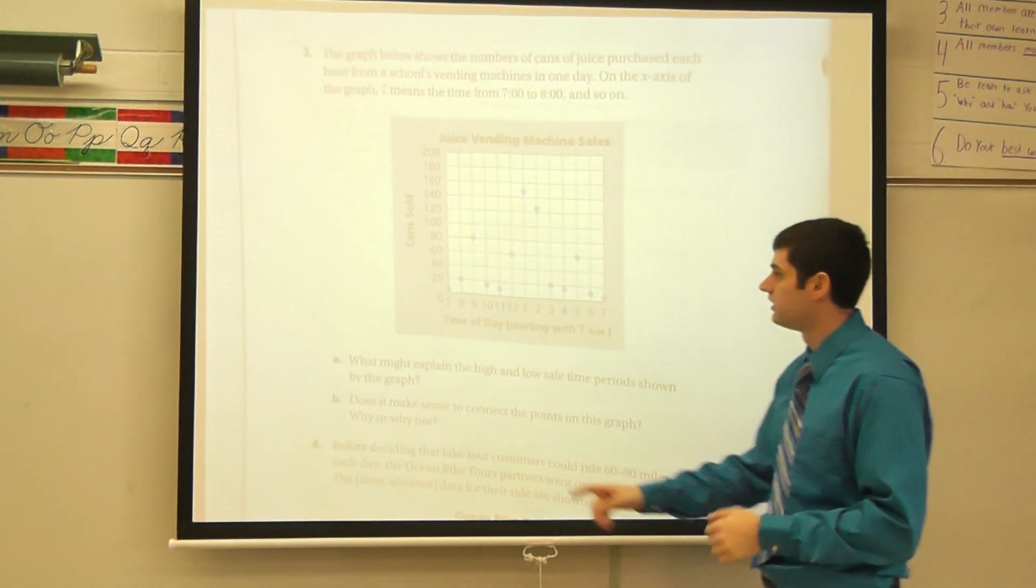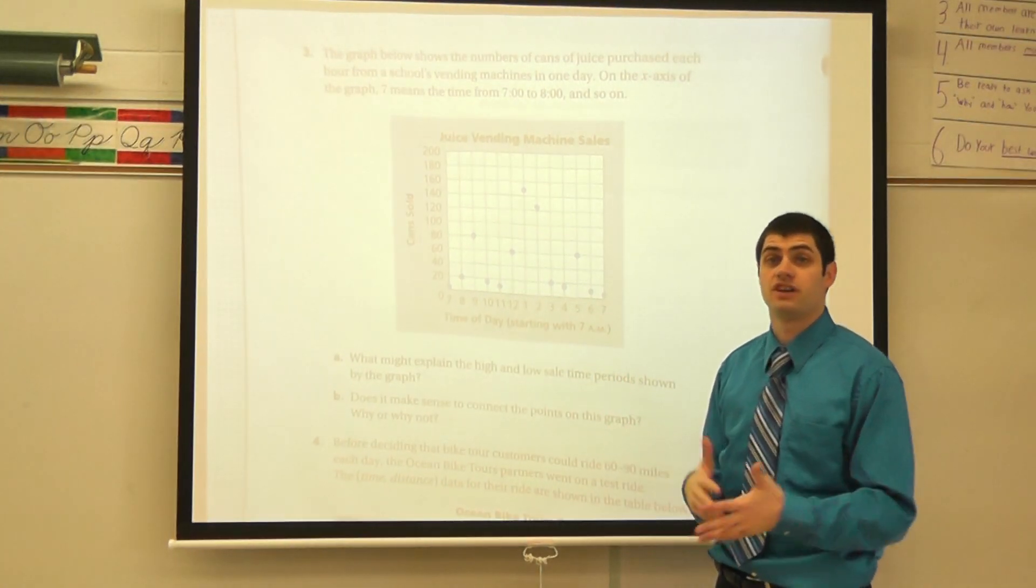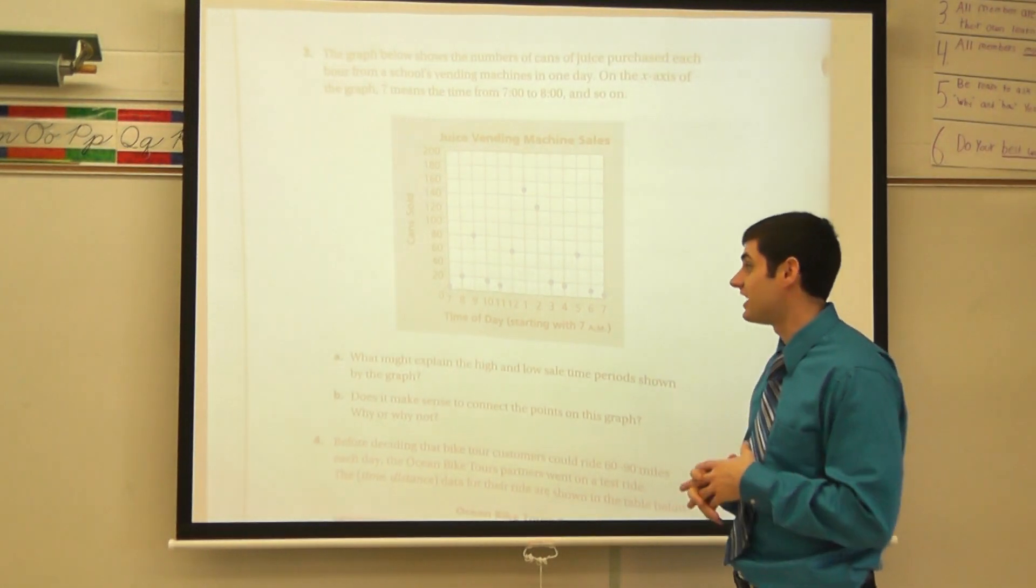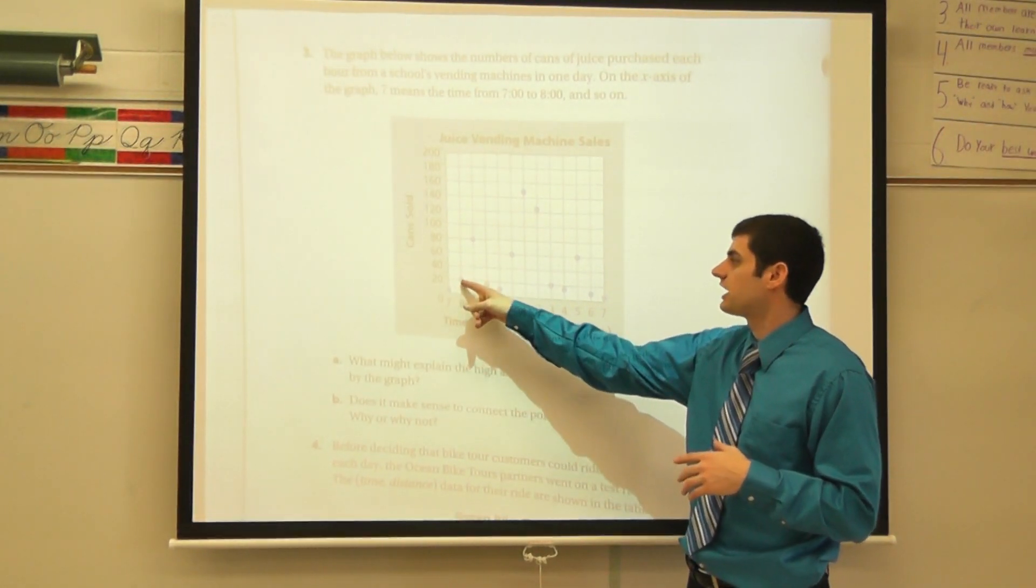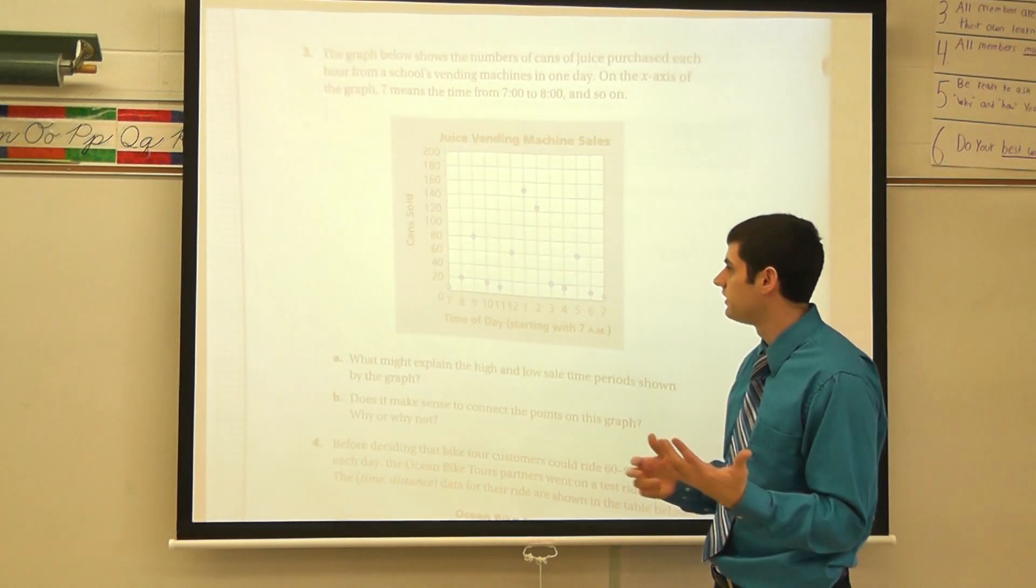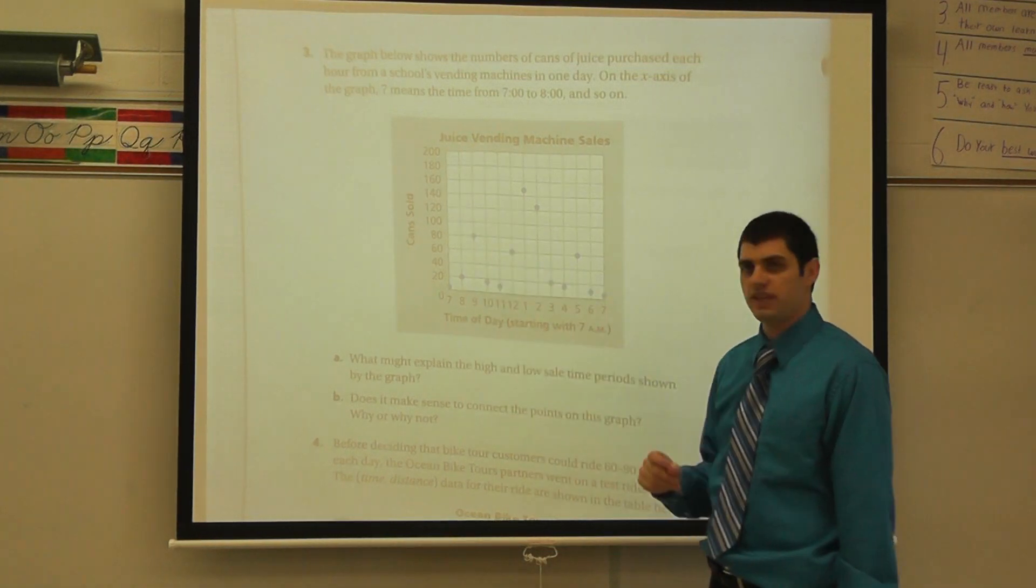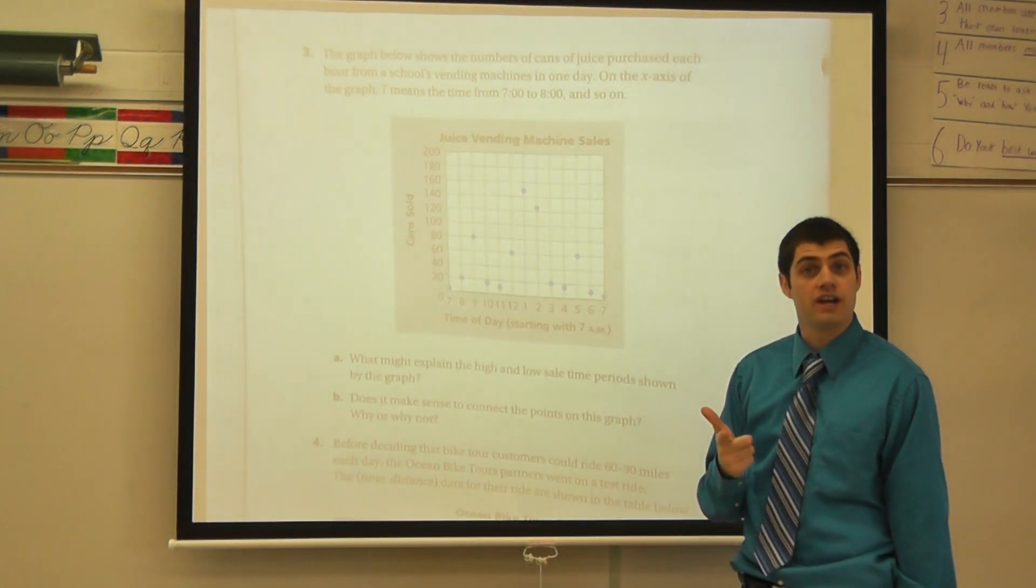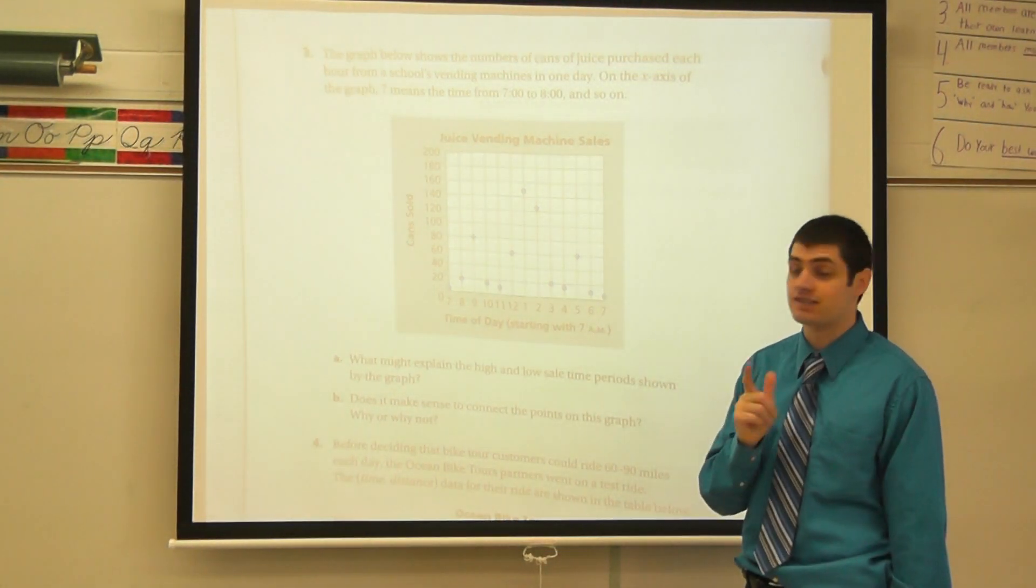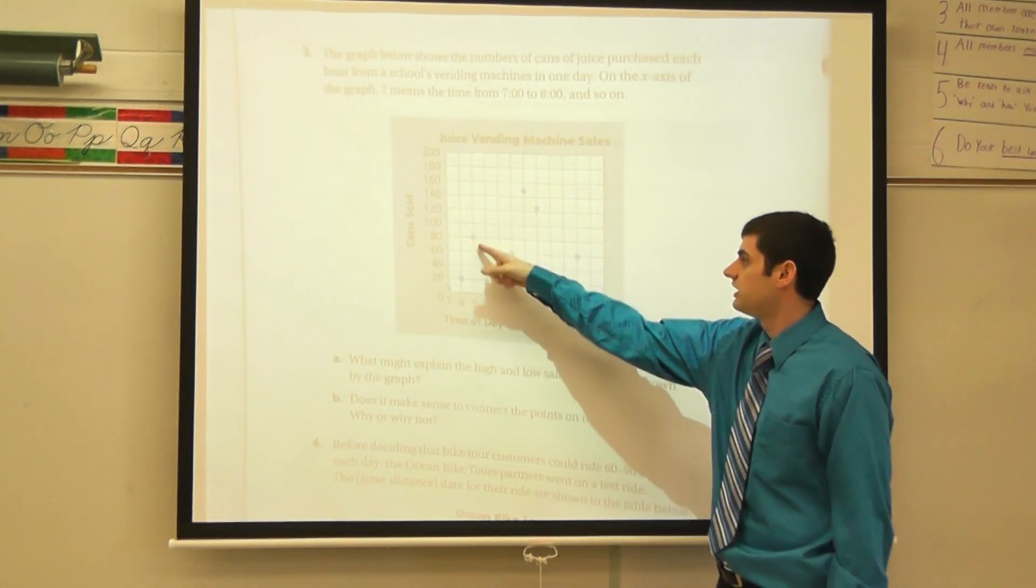One says what might explain the high and low sale time periods shown by the graph here. As I look, not really too much going on at 7 a.m. Well, why not? Well, chances are there's probably not many students in the building at 7 a.m. 8 a.m., it kind of goes up to about 20. So maybe that's the morning when some students are coming in. 9 o'clock, it kind of goes up to 80. So what could that be? You're right. Maybe it's the breakfast. People that are coming in that are purchasing juice for breakfast.